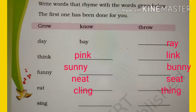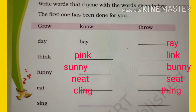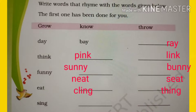Next question: write words that rhyme with the words given below — the first one has been done for you. Day, bay, ray. Think, pink, link. Funny, sunny, bunny. Eat, neat, seat. Sing, cling, thing.